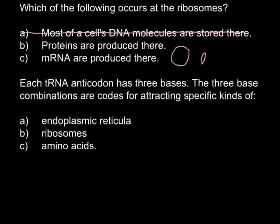We are left with B and C. Answer C: messenger RNA are produced there. This is not correct because ribosomes use messenger RNA in order to translate it into the protein sequence. So we can cross out answer C, and the correct answer would be B: proteins are produced there.